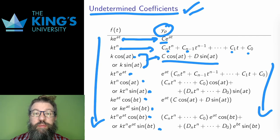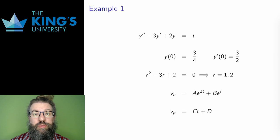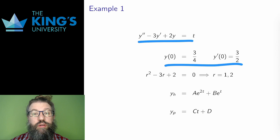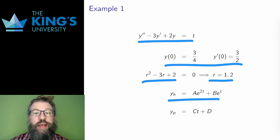This is best seen by example, so let me do one. Here is a non-homogeneous SOCCLED. I have initial conditions, which I'll use at the end to determine a unique solution. First, I write the characteristic equation. This quadratic has real roots r equals 1 and r equals 2, so the homogeneous solution is a linear combination of e to the 2t and e to the t.